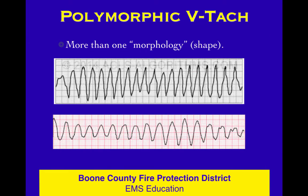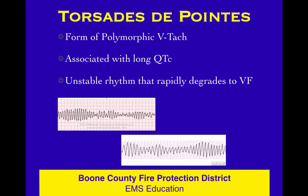Going back, these are all monomorphic VTACs — the same shape every time, only one shape. Now look at this: there's more than one shape, several shapes — that's polymorphic VTAC. It's wide, ugly, and fast. It might be a bundle branch block or an accessory pathway pattern, but it's polymorphic — multiple shapes. A specific version of polymorphic VTAC is Torsades de Pointes, associated with long QTc intervals and treated with magnesium sulfate. It's an unstable rhythm that rapidly degrades into V-fib.